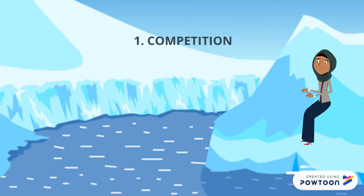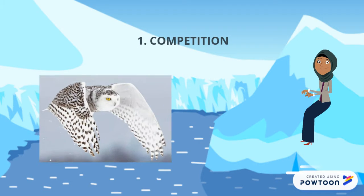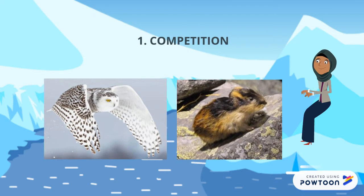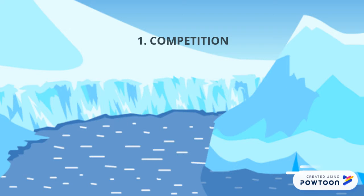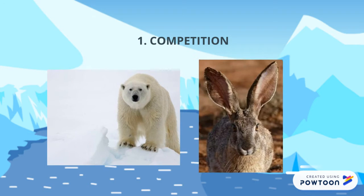Relationships. The first one: competition relationship. It is an intraspecific relationship. It is negative for both of the animals. Competition is a relationship between organisms in which one is harmed when both are trying to use the same resources related to growth and reproduction. An example is snowy owls and lemmings, and another one is bears and hares.